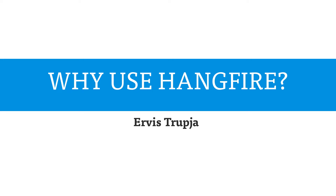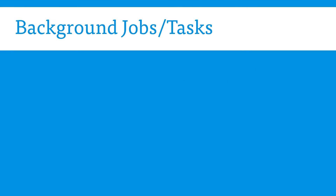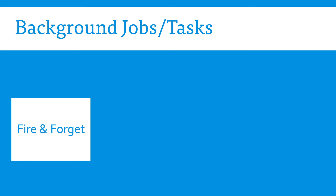Before we talk about why use HangFire, let us talk about the different types of background jobs or tasks that we have. The first type is the fire and forget. These tasks happen only once. An example would be when a user signs up and you send the user a welcoming email, and you send that only one time.